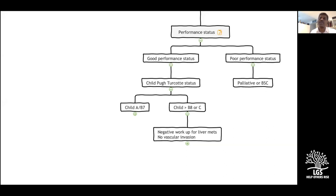Sorafenib has not been well-tested in Child C patients, but some give it as experimental therapy. For Child A or B7 with good liver function, we do the workup for liver metastasis. If the metastasis workup shows positive lesions in the lung or bone, medical treatment is the only option.